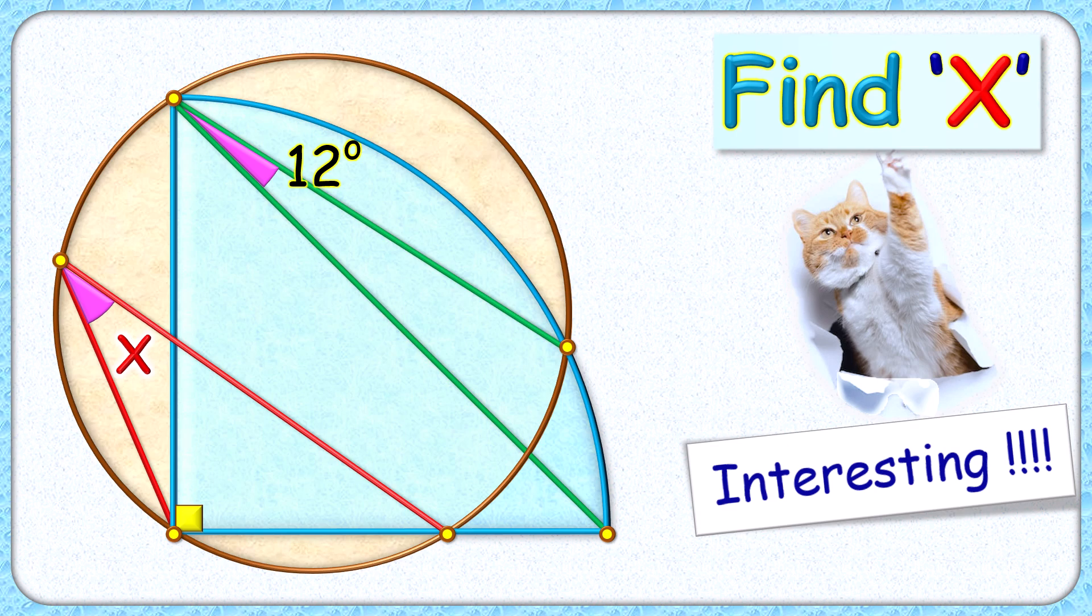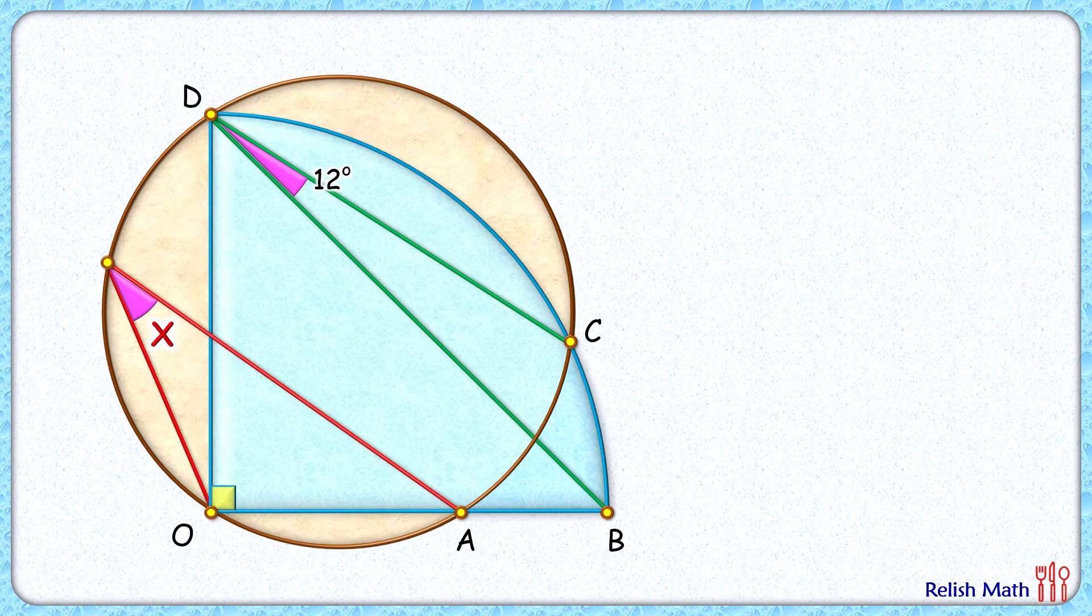Wow, this question looks interesting. Here given to us is a circle and a quadrant. The angle made by this green line segment is given as 12 degrees. The exciting part is, with this limited data, we have to find the value of angle X. Let's check the solution.